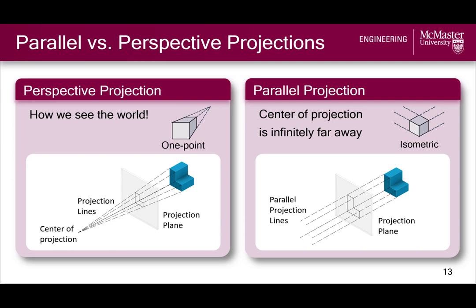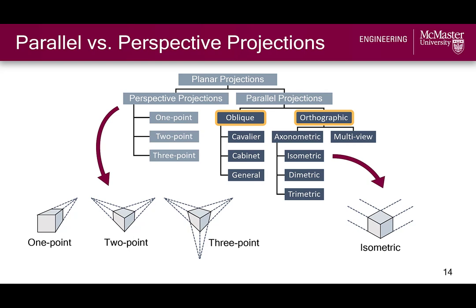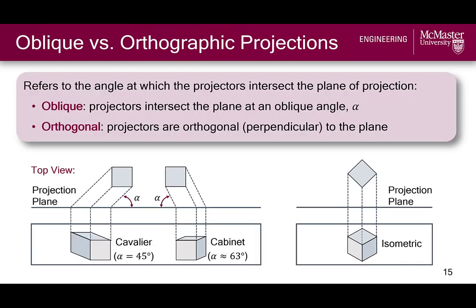This covers the first distinguishing feature of planar projections, with example perspective and parallel projections of simple cubes shown below. The isometric representation of a cube is one type of parallel projection — specifically a type of orthographic projection. The next thing we have to do is distinguish oblique from orthographic. The difference between these two categories is the angle between the projection lines and the projection plane. In oblique projections, the projection lines intersect the plane at some oblique angle alpha. If that angle is 45 degrees, we get a cavalier oblique projection, where the depth dimension appears twice its true length.